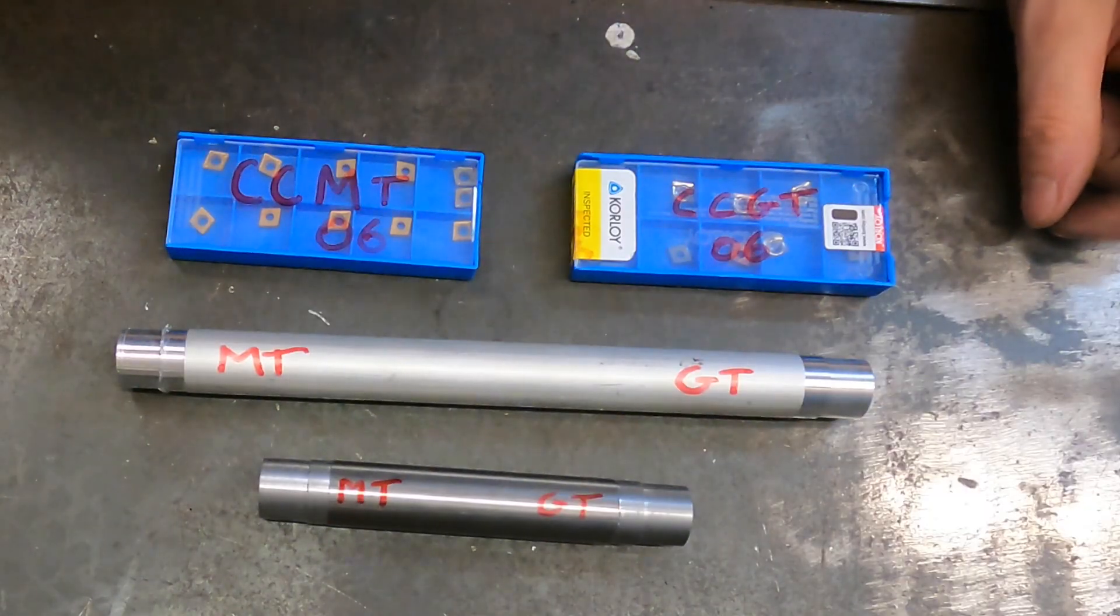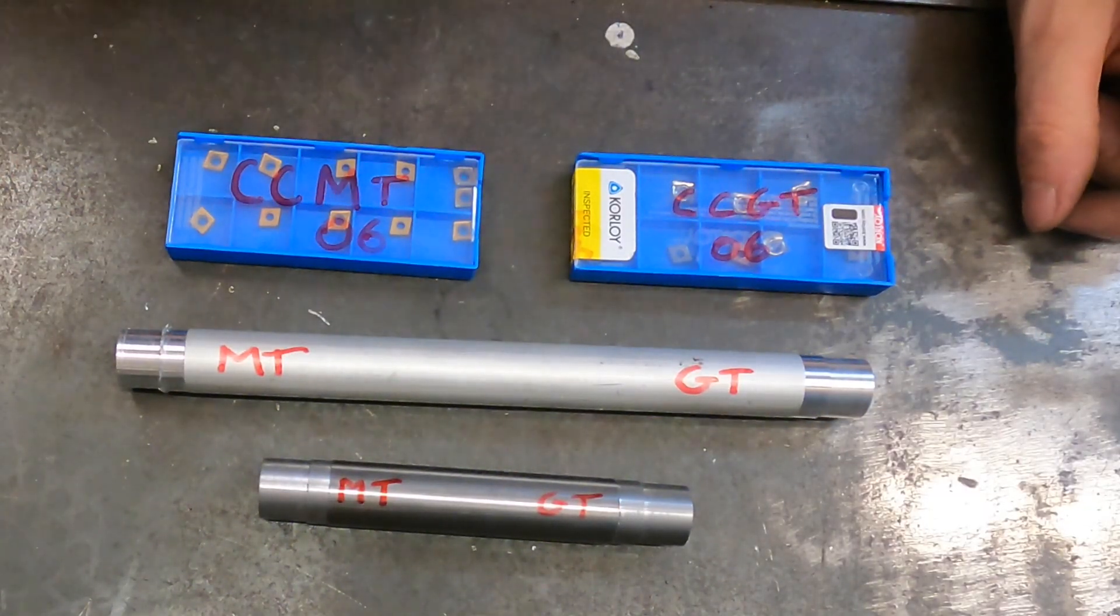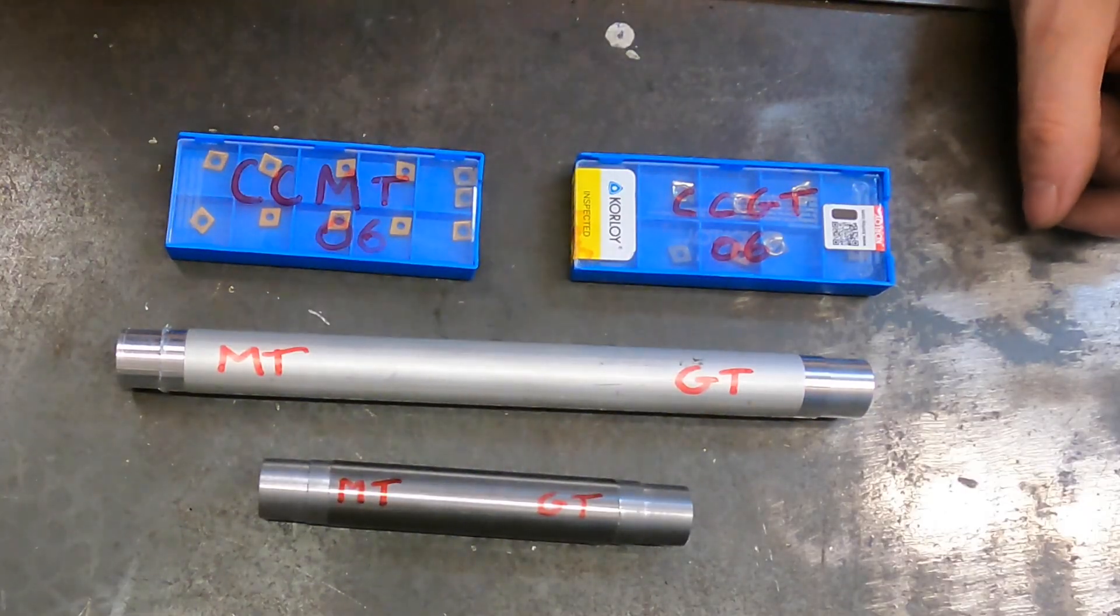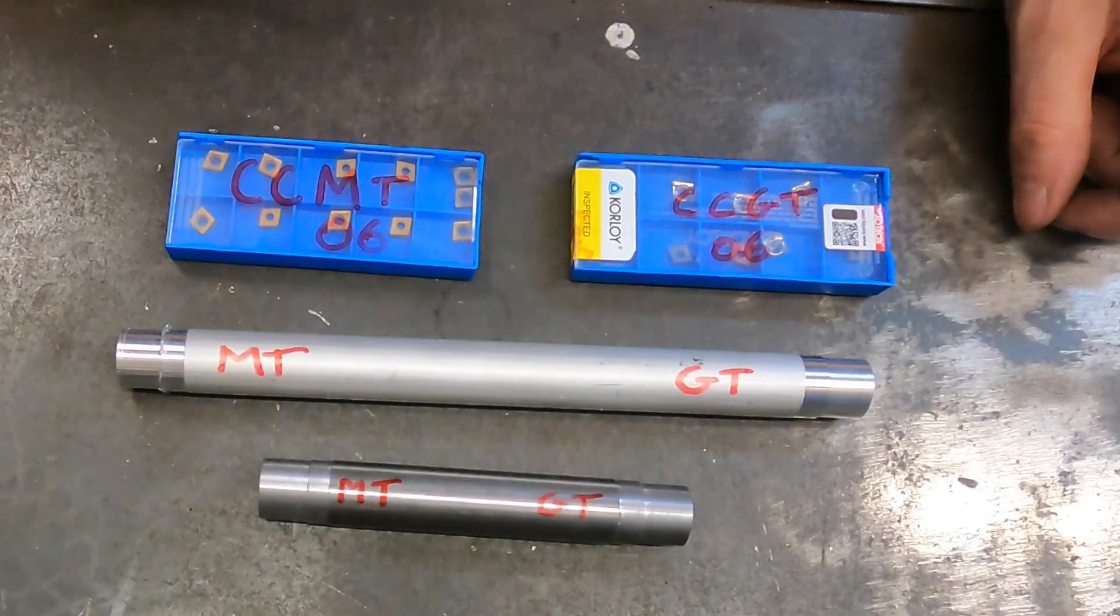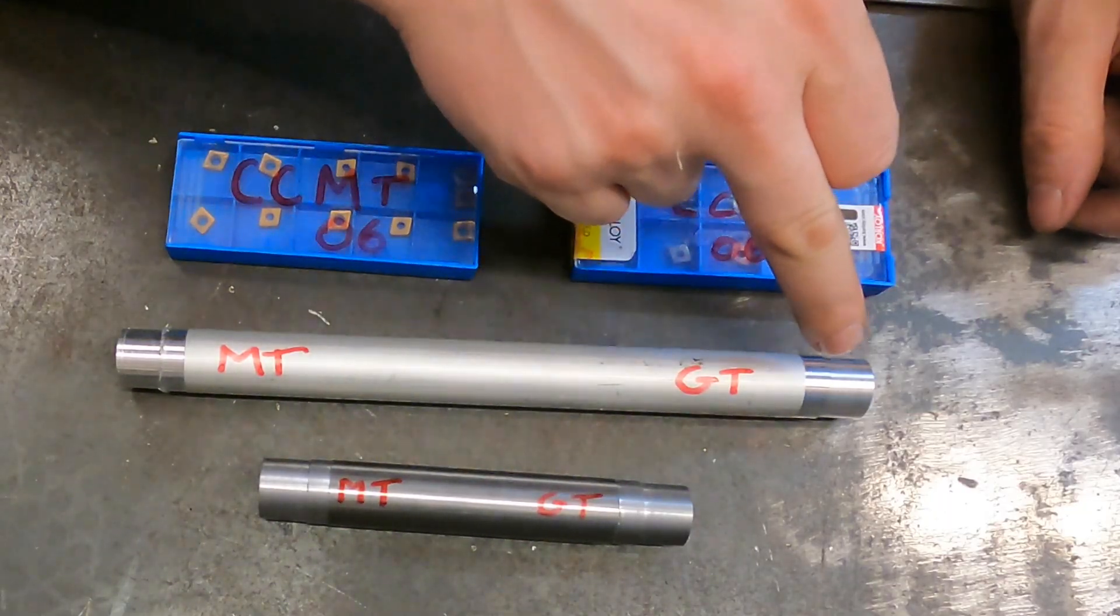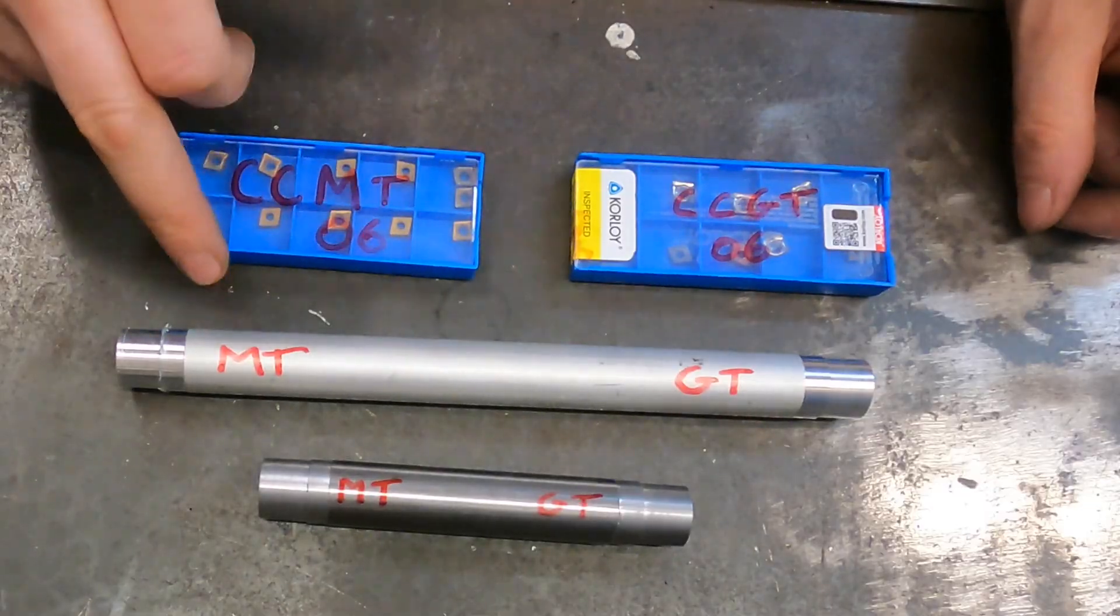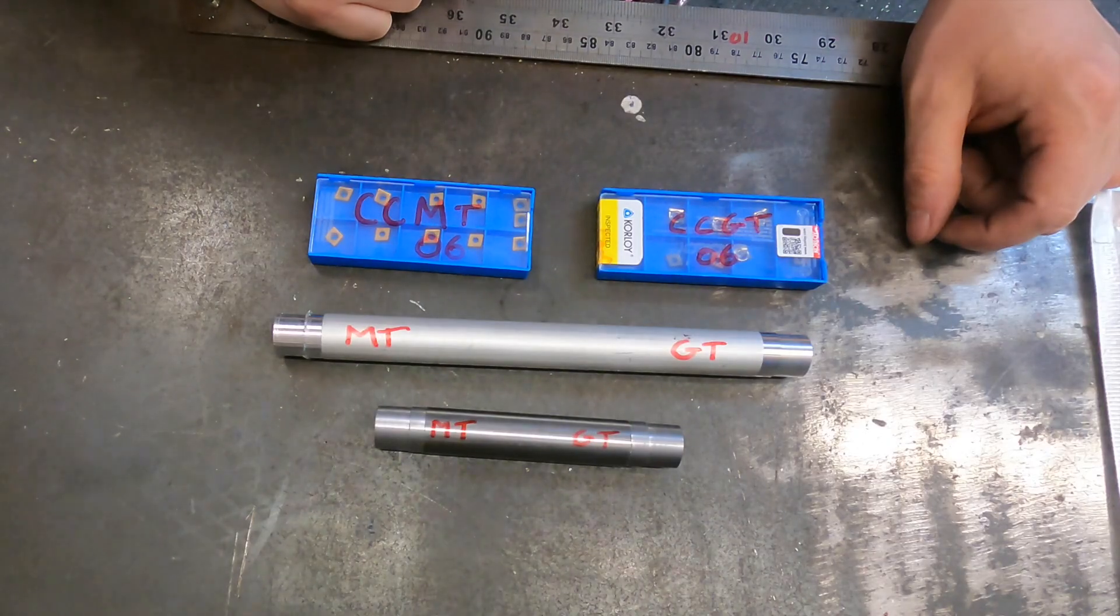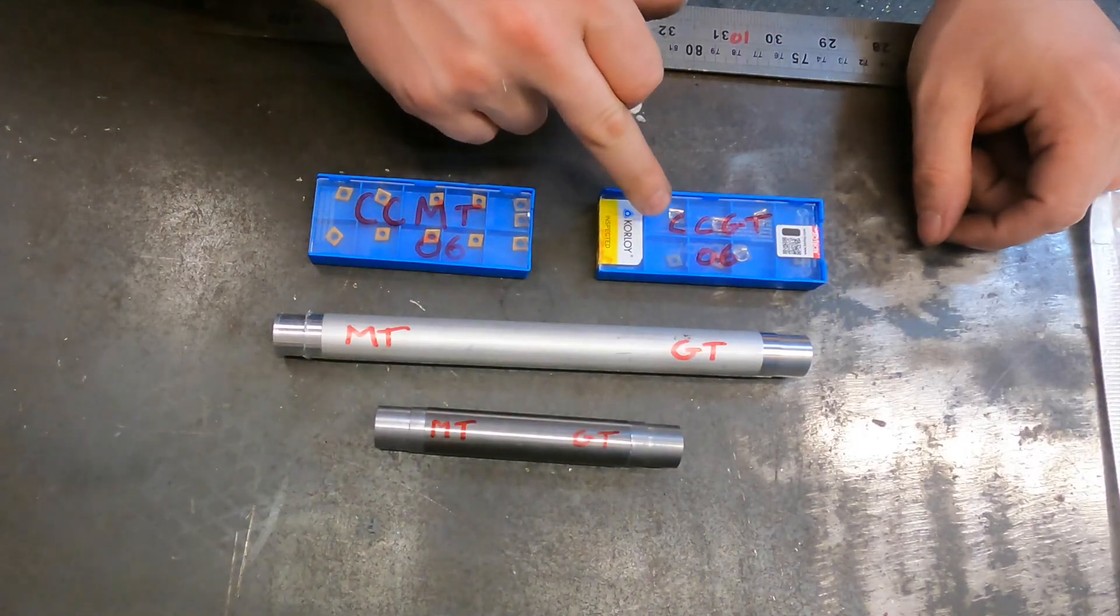So overall then, my initial comparison of the MT and the GT, the GT I'm definitely going to be using now when working mild steel and aluminum. I just find the finish that this gave is outstanding, so much better than the MT. I'm not too sure how it's going to fare on stainless given that these are designed to cut aluminum.